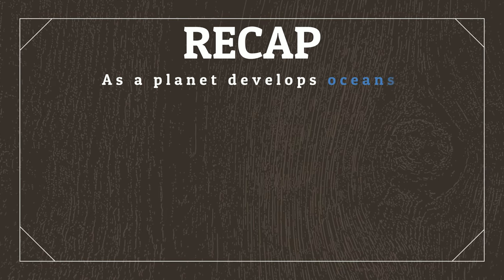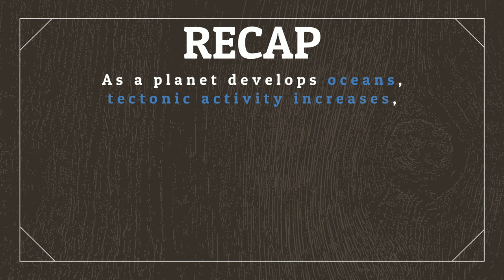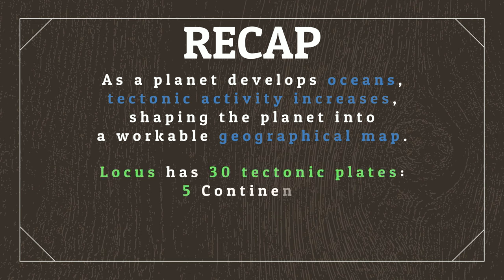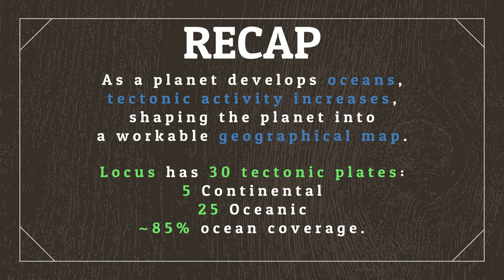And that's it! With wind zones and ocean currents done, we can establish more specialised geographical climates which we'll work on in the future. To recap: as our primordial planet developed oceans, tectonic activity increased, giving rise to the tectonic plates that have shaped the planet into a workable geographical map. We've given Locus 30 tectonic plates, 5 of which are continental and the remaining 25 are oceanic, giving us an oceanic coverage of around 85%, which is slightly higher than Earth. Join me next time where we'll look at the origins of life, establishing how life is going to be created on Locus. You can find all the information for this video, as well as other resources for worldbuilding in general, over at worldbuildingcorner.com. And if you enjoyed this video, don't forget to like and subscribe to follow the worldbuilding journey. Until next time, stay awesome!